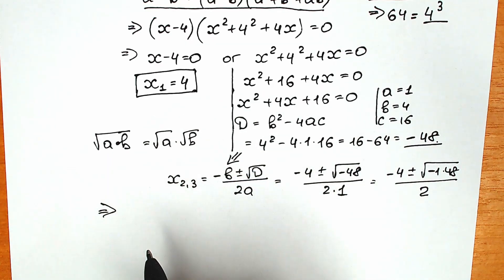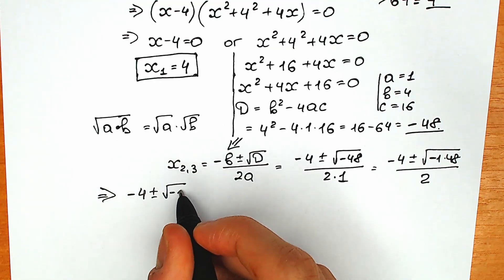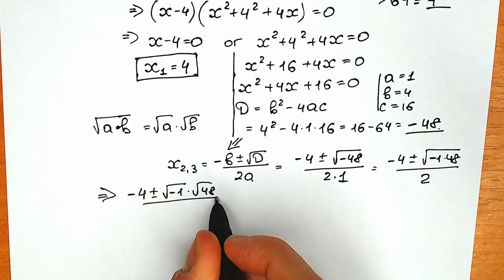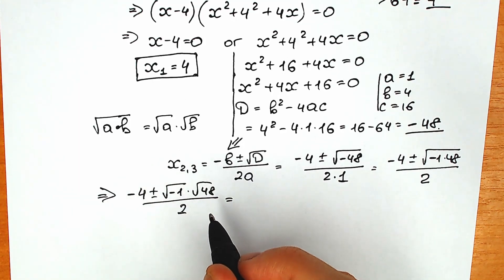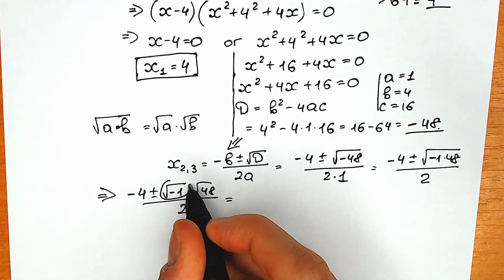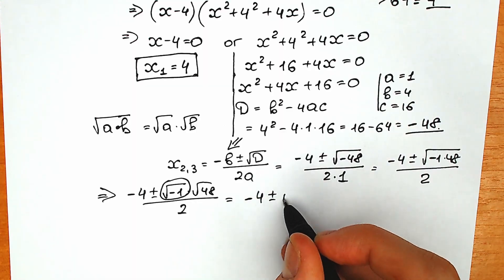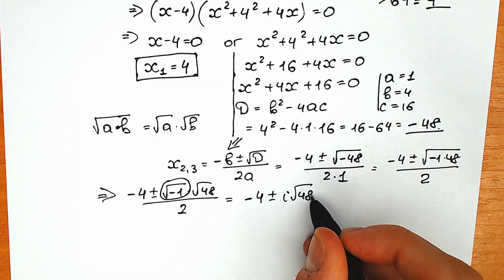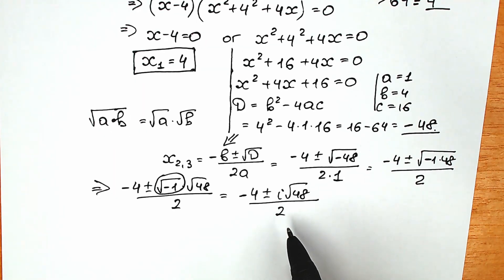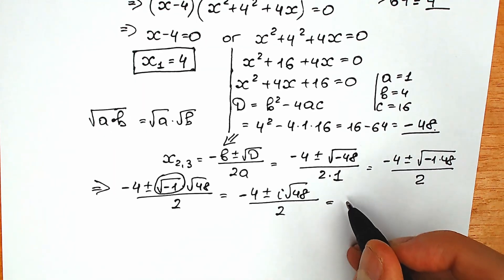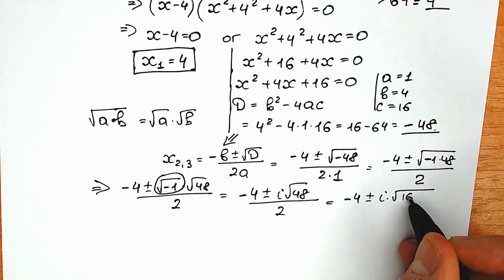As a result we have minus 4 plus-or-minus square root of minus 1 times square root of 48, divided by 2. The square root of minus 1 is our complex unit — this is i. So we have minus 4 plus-or-minus i times square root of 48, divided by 2. Now let's look at square root of 48: we can express 48 as 16 times 3.